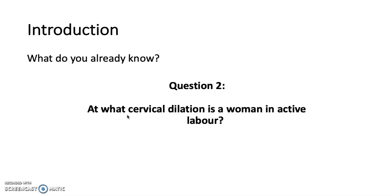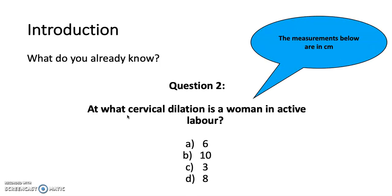Question two: what cervical dilation is a woman in active labour? Is it A) 6cm, B) 10cm, C) 3cm, or D) 8cm? The measurements are in centimetres. The answer is C) 3. The active phase of labour begins when the cervix is three centimetres dilated.